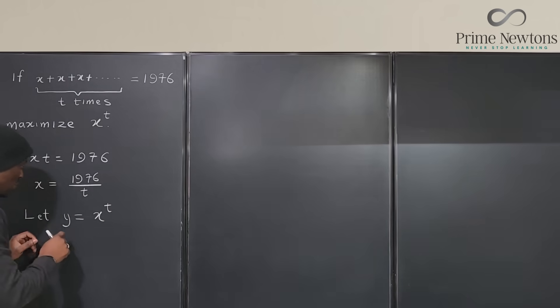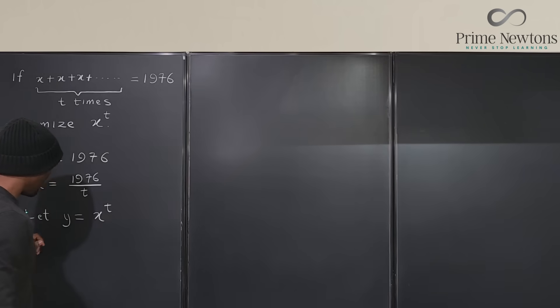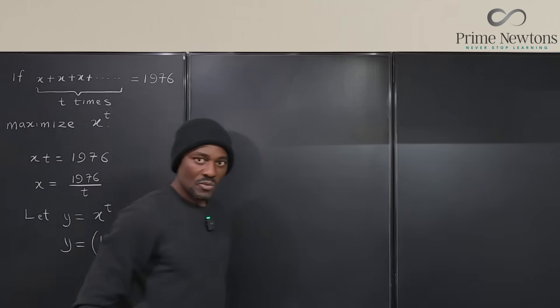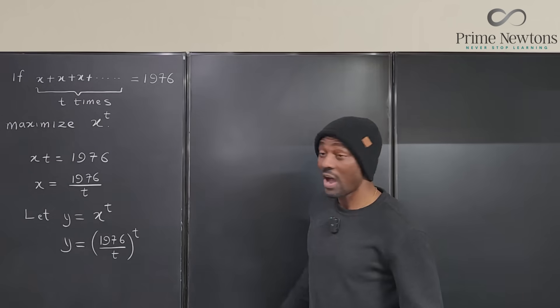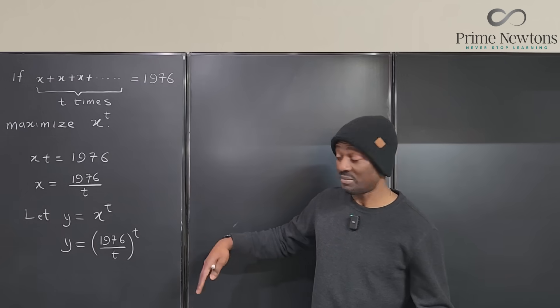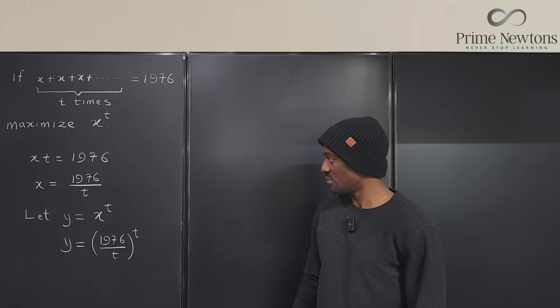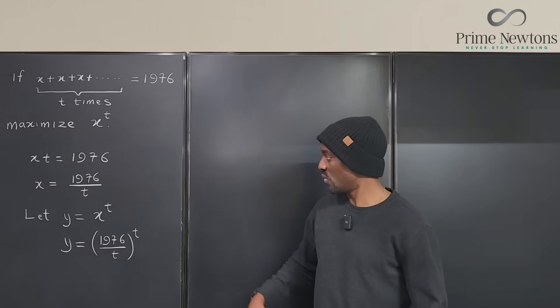So in order to maximize this we're going to say Y is equal to, instead of writing X, we write 1976 over T raised to power T. Now I could have written this in terms of X but it doesn't matter which way I write it. Now I've written it in terms of T, so if we find T we can easily go find what X is.